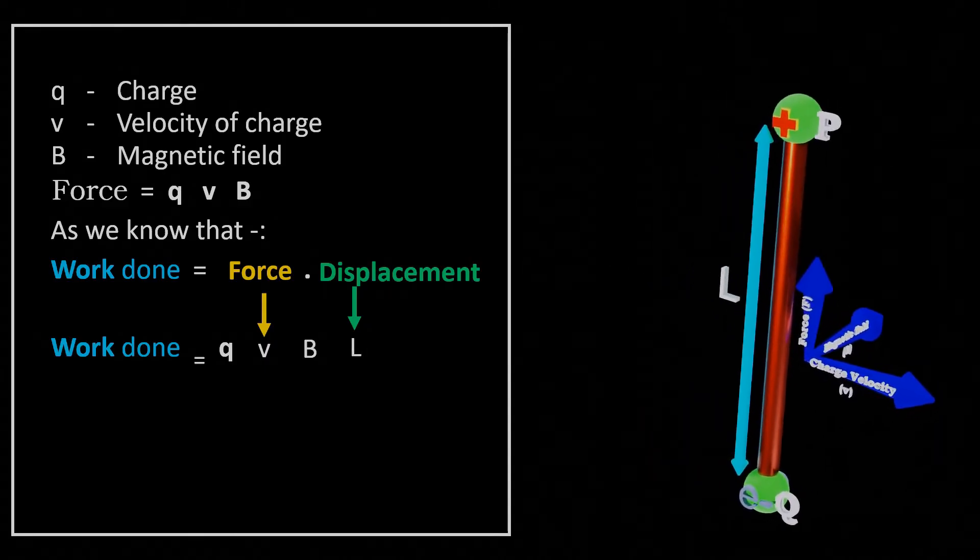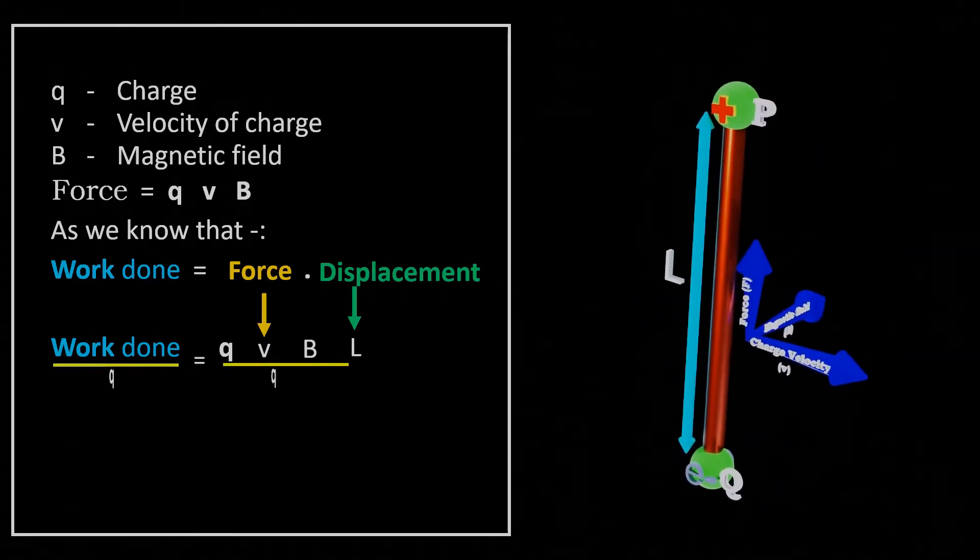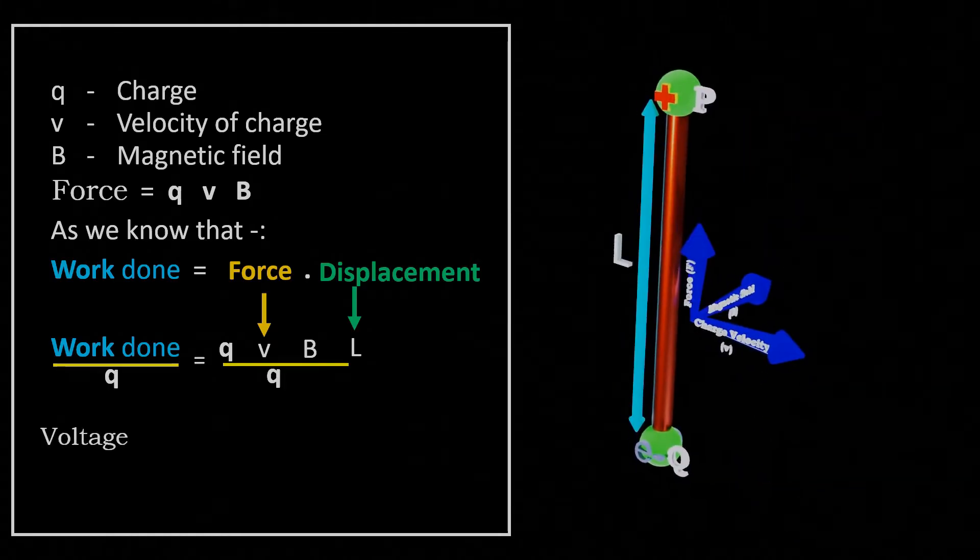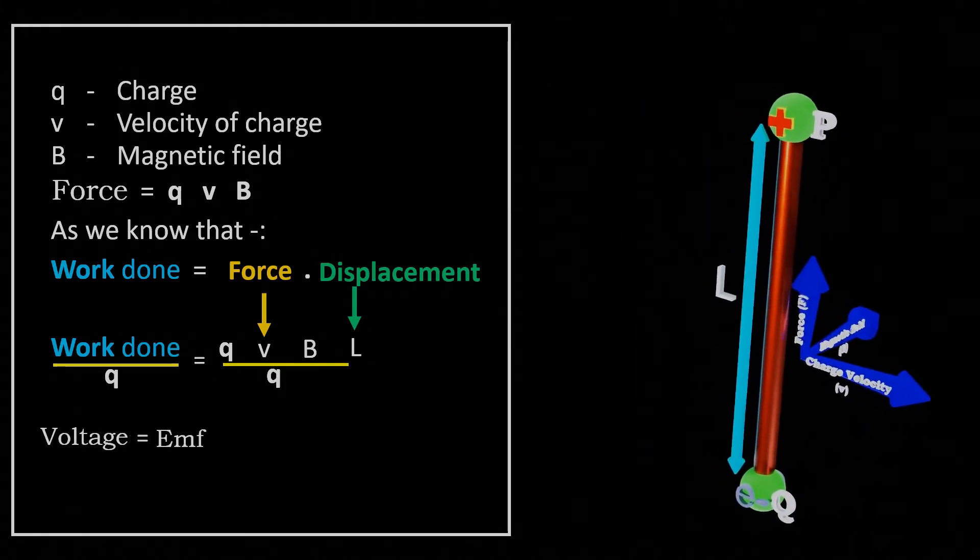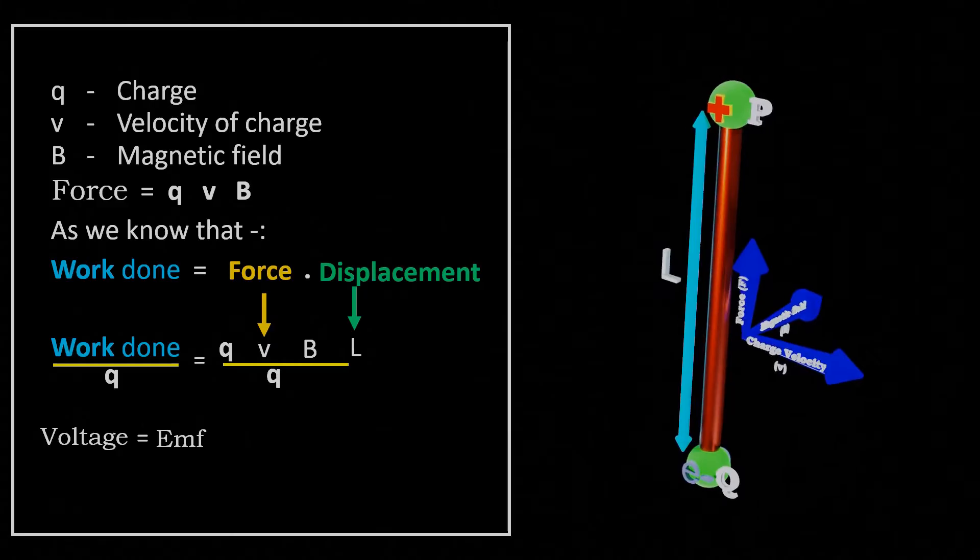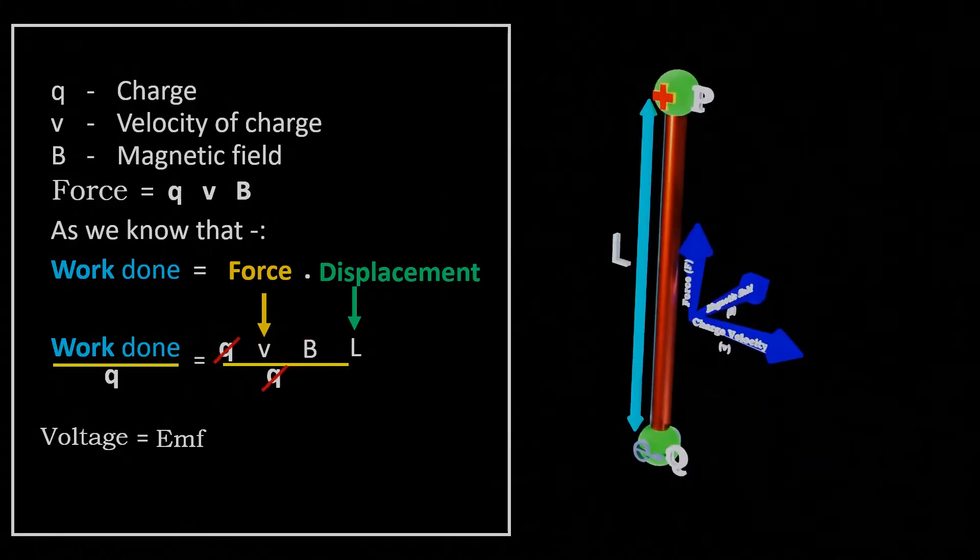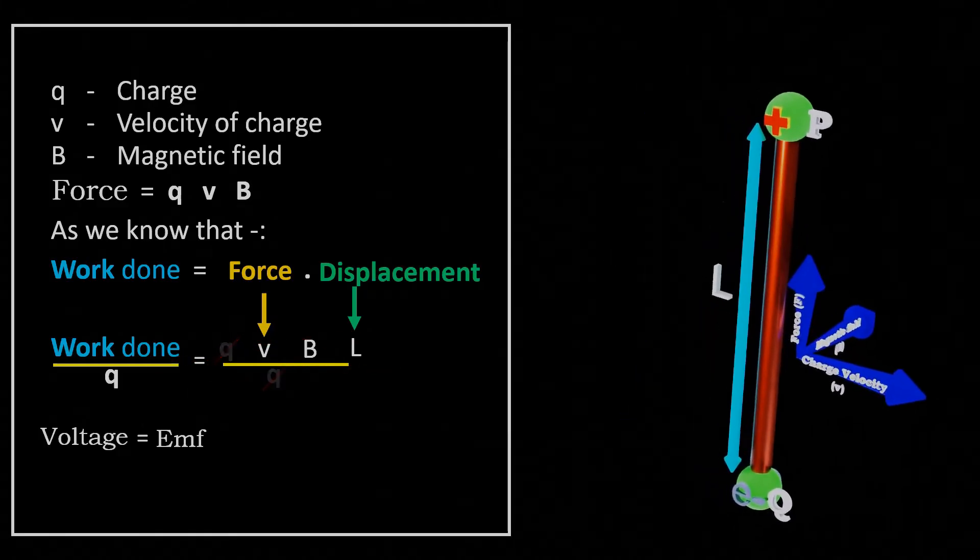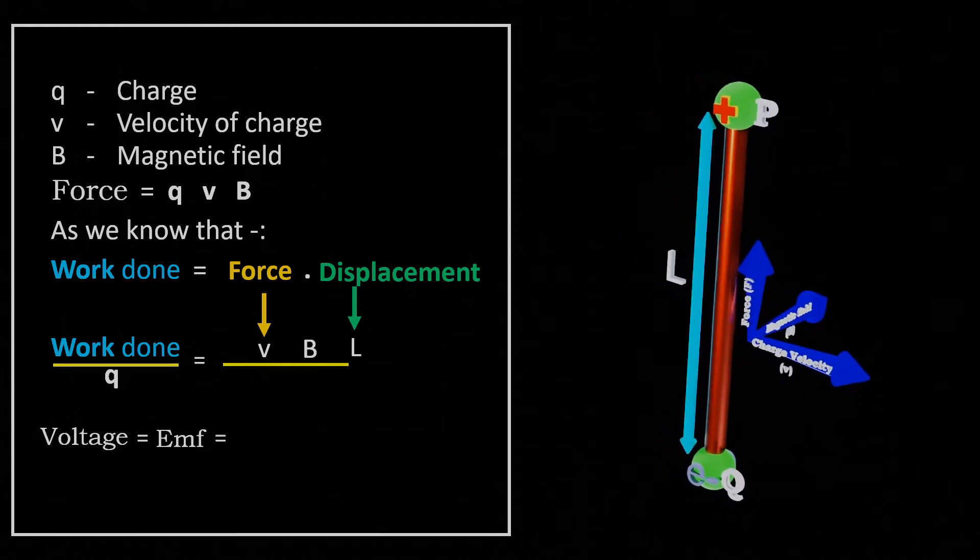Also, we know that work done per unit charge Q is a voltage, which we can call EMF in this case. And after simplifying the equation, we get the equation of EMF that is BLV.